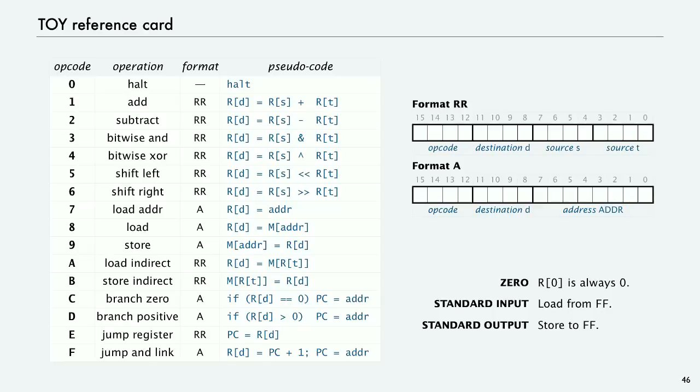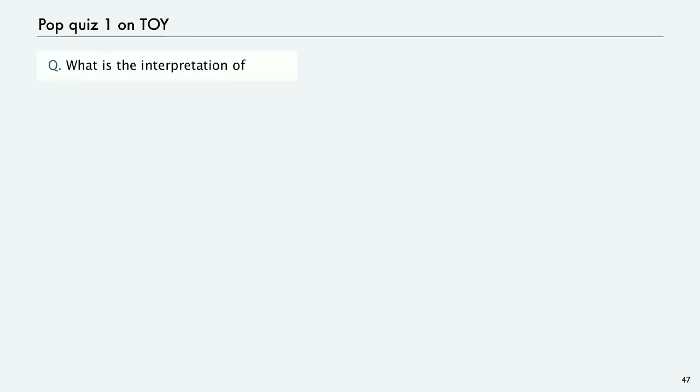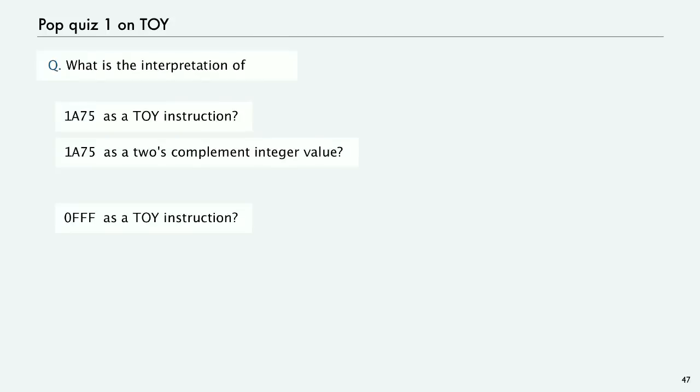So TOY programming is an interesting intellectual challenge. And I encourage everybody to learn more about it. And so the kind of thing though that you have to know to be sure that you really understand what's going on, you have to be able to answer questions of this sort. So I give you a 16-bit number. What is that number if it's interpreted as a TOY instruction or as a 2's complement integer value?